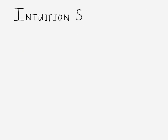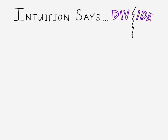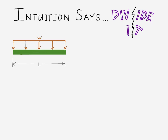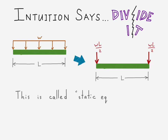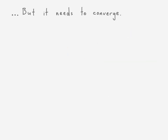So the first thing we think about when splitting up loads is just dividing it — taking this distributed load and just taking half the load and throwing it on one side, and then half the load on the other side. WL would be the total load, half on the left, half on the right. That actually works okay; it's called static equivalency, but it takes time to converge.